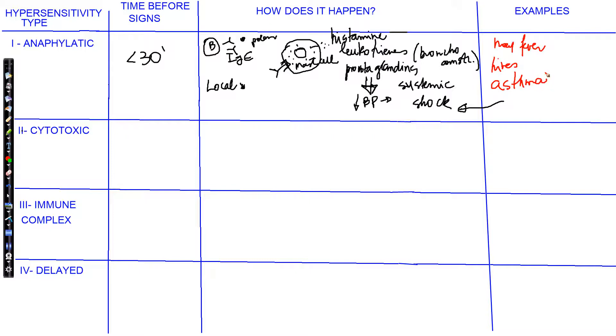When we think about type 2, we're going to look here at signs showing between 5 and 12 hours. And then it happens by your red blood cells, mostly the red blood cells being attacked by your leukocytes. Think that you have a red blood cell here. The example, I'm going to go ahead and tell you the example here because then you're going to understand better. Is blood mismatch. When you have a transfusion and that leads to a reaction that is not favorable, because you received the wrong blood, then this is what's going to happen.